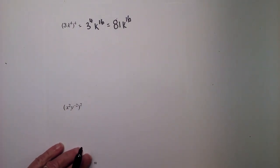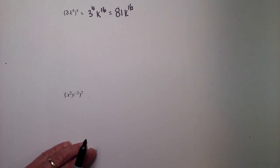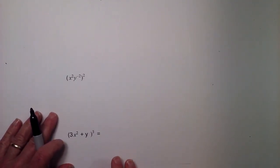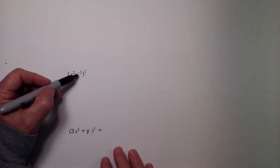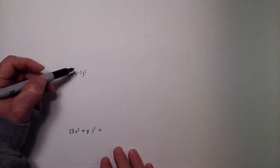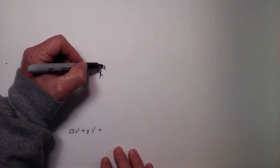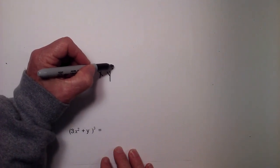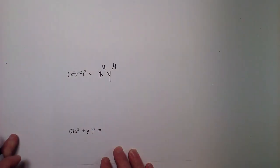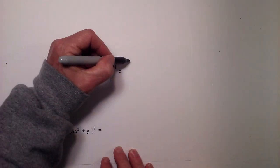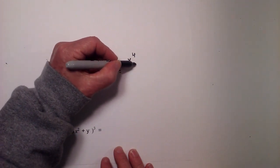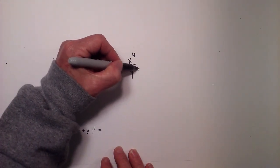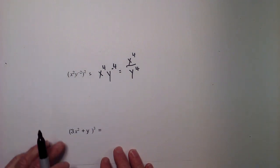This next one, again, we have some negative numbers, so let's work them. We have 2 times 2 will equal X to the 4th, 2 times negative 2 is Y to the negative 4th. And then this can be written X to the 4th over Y to the 4th.